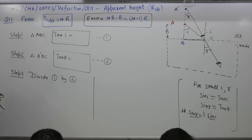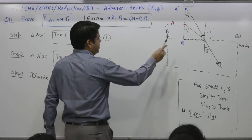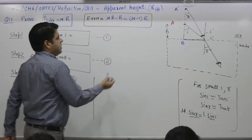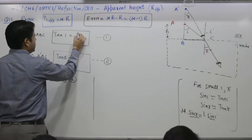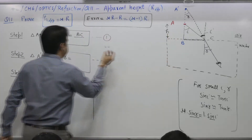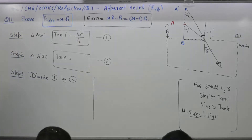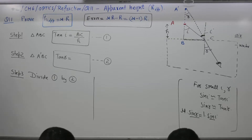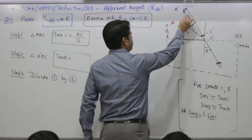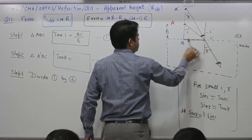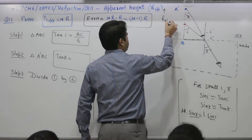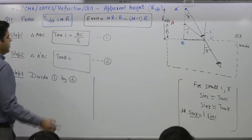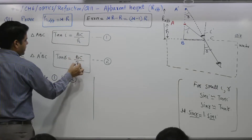Tangent of i is what? For triangle ABC, tangent i equals perpendicular over base, which is BC divided by AB. AB is H. Tangent R: in triangle A-dash BC, tangent r equals BC divided by A-dash B. A-dash B is the apparent height. So tangent r equals BC divided by H-apparent.